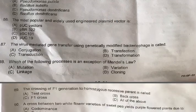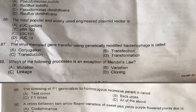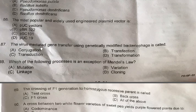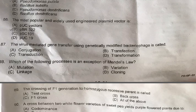Question 86: The most popular and widely used engineered plasmid vector is — A: pUC vectors, B: pBR322, C: Pseudomonas denitrificans, D: pUC19. The correct one is B, pBR322. It is extensively used, while pSC101 was the first engineered plasmid vector. Question 87: Virus-mediated gene transfer using a genetically modified bacteriophage is called — A: Conjugation, B: Transfection, C: Transduction, D: Transformation. Option C, Transduction, is correct.